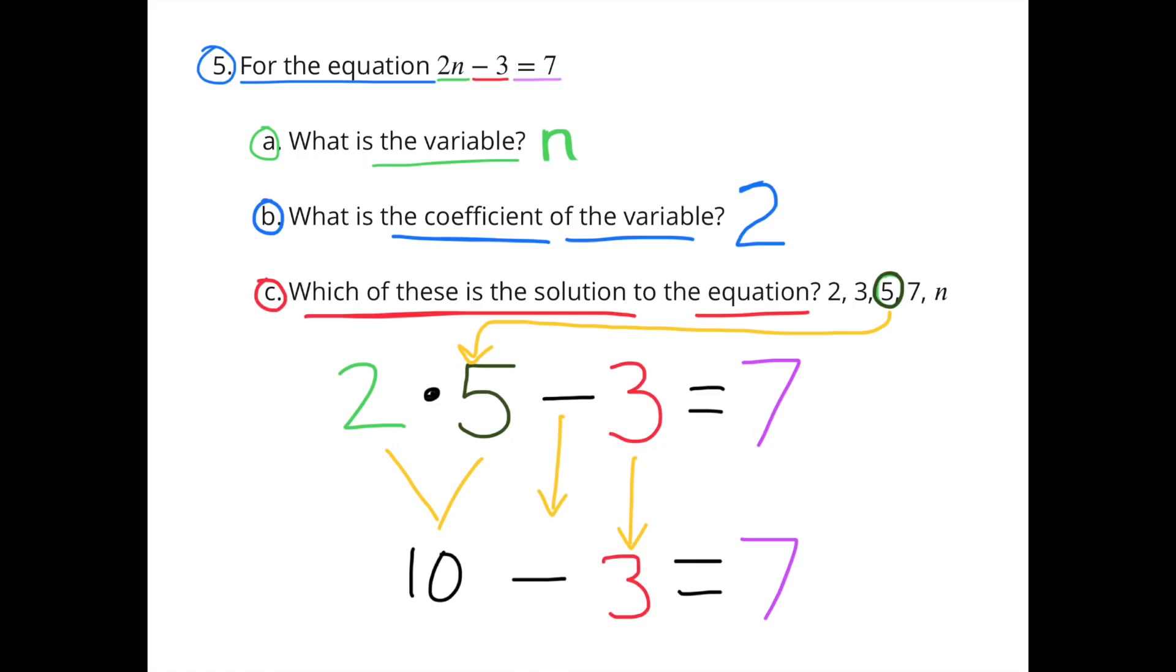Number 5: For the equation 2n minus 3 equals 7. Part A: What is the variable? In that equation, the n is the variable. Part B: What is the coefficient of the variable? The coefficient in this equation is 2. Part C: Which of these is the solution to the equation: 2, 3, 5, 7, or n? I substituted 5 for n, and I have 2 times 5 minus 3 equals 7. And I tested it out. 2 times 5 equals 10 minus 3 equals 7. So the solution to the equation is 5.